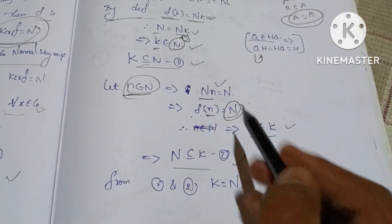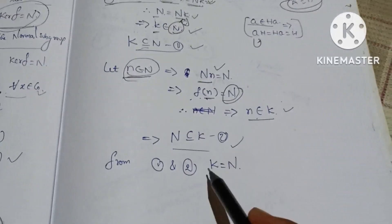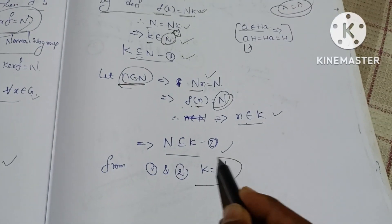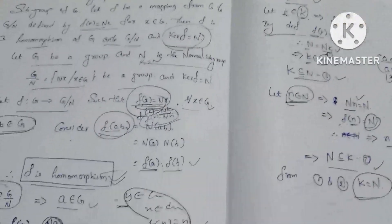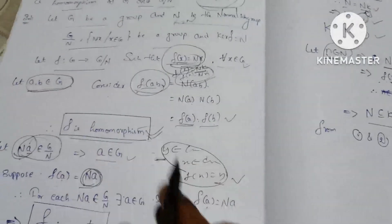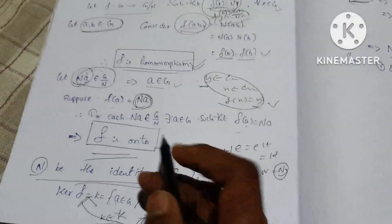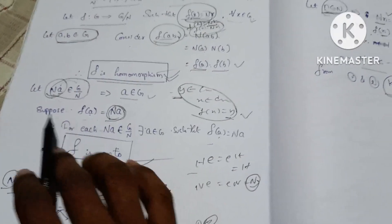From condition 1 (K subset of N) and condition 2 (N subset of K), we conclude K equals N. Therefore the kernel of F is equal to N.